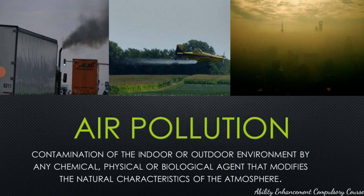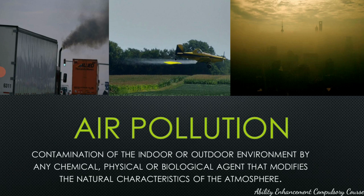Air pollution is the presence of materials in air in such concentrations which are harmful to humans and the human environment. What you see here are different ways in which air is getting polluted — smoke being released into the atmosphere, dusting crops with chemical fertilizers or pesticides, and a picture from Shanghai, China, where smog — a mixture of smoke and fog — is covering up the skyline itself. These are all examples of air pollution.